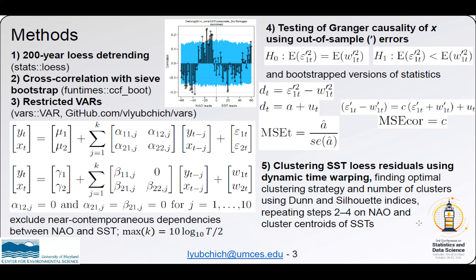For testing the causality, we used bootstrap versions of the following statistics. The first approach uses differences of squared residuals and fits an OLS regression with just an intercept A and residuals U_t. The test statistic MSET can then be used to test the hypothesis.